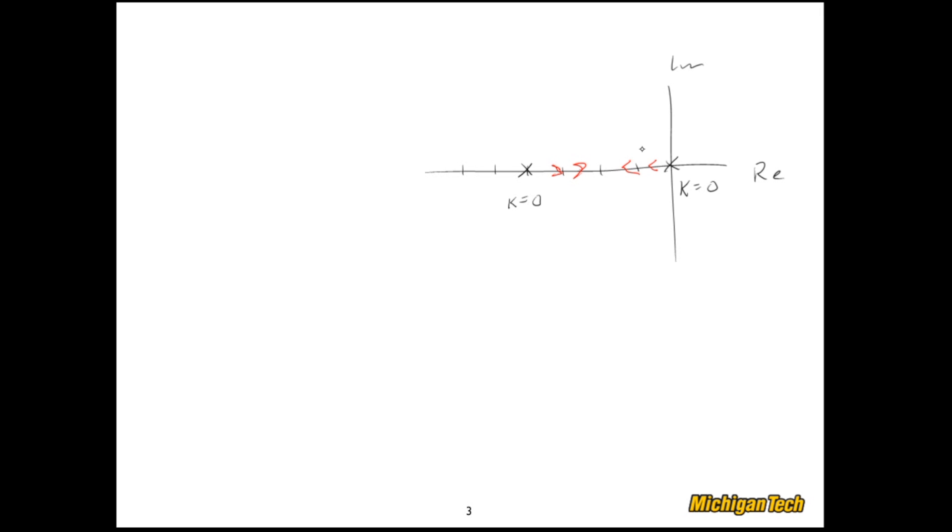As you increase K, it moves along the real axis. And then, once it gets to this point, it zooms up into the complex plane. Now, if I want zeta to be 0.7, that would be about a 45 degree angle here. Which would be that point.